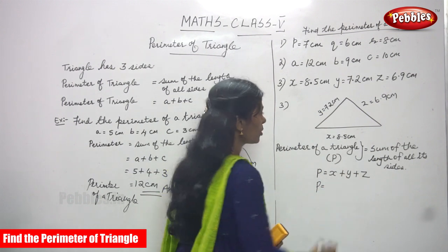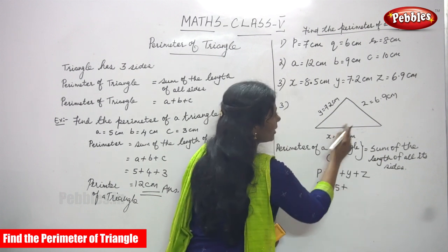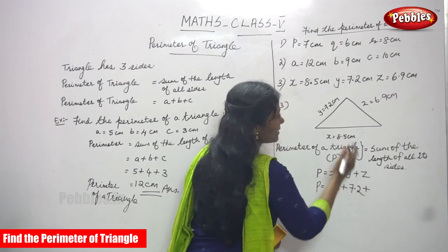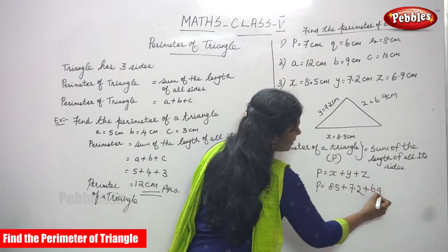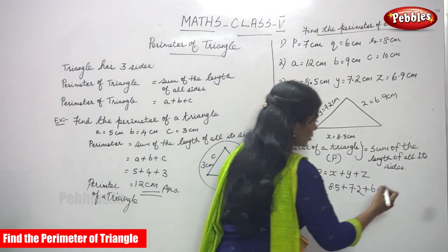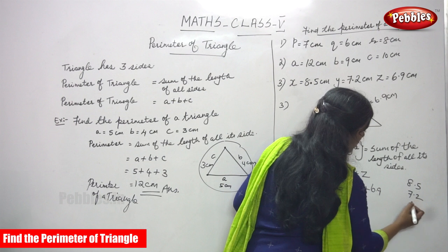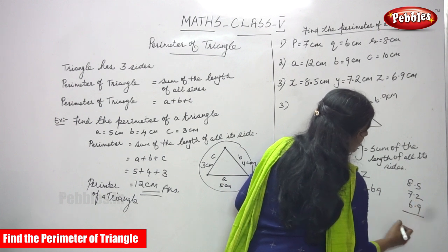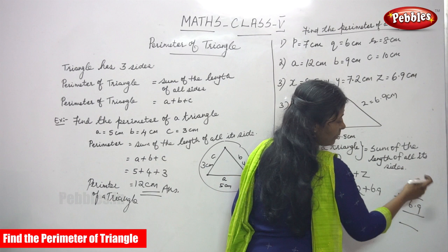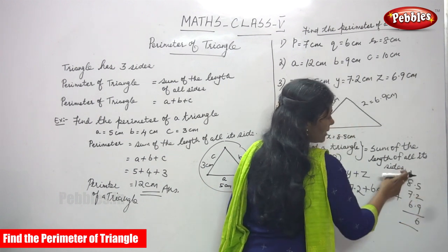Now we substitute the values: x is equal to 8.5, plus y is equal to 7.2, plus z is equal to 6.9. No need to write the units at this step. So we write 8.5 plus 7.2 plus 6.9 and add everything together.